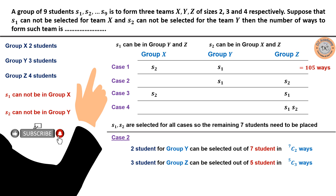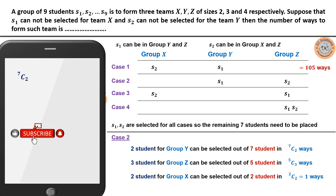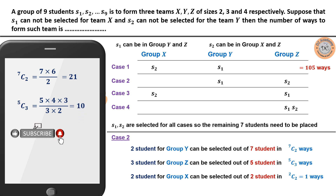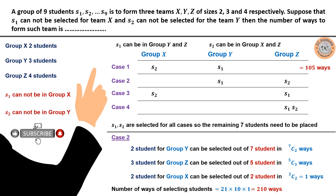After filling groups Y and Z, two students remain, which exactly fills group X in 2C2 = 1 way. Now 7C2 = (7×6)/2 = 21 and 5C3 = (5×4×3)/(3×2×1) = 10. So the total number of ways for Case 2 is 21 × 10 × 1 = 210.